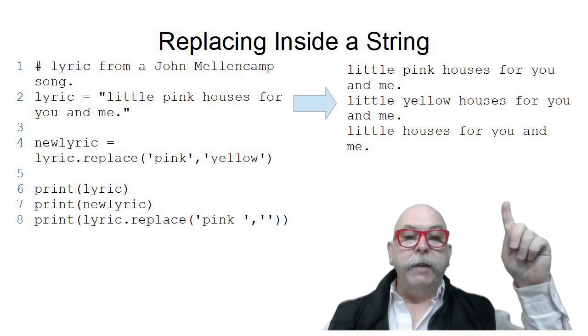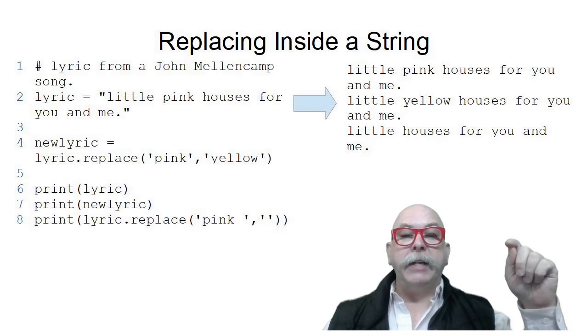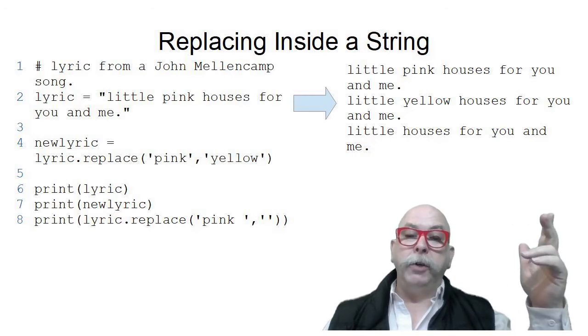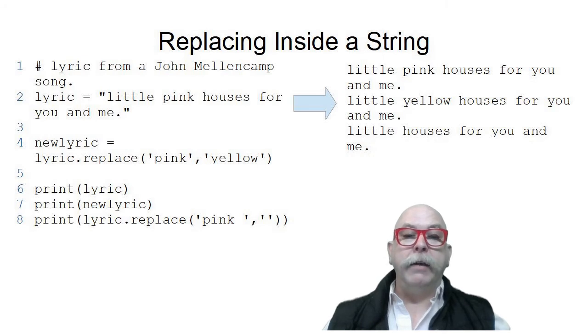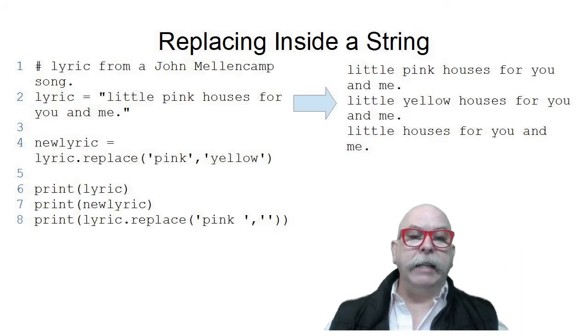Also, remember that you can change or replace a substring with the empty string. So in the third version, it now says Little Houses for You and Me because it replaced pink space with nothing and removed that from the string. This is a really good way to find and delete something or a substring from within a string if you don't need it there.